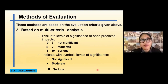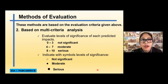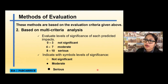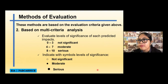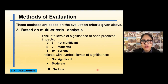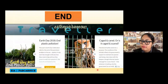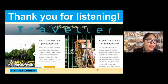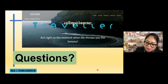We can evaluate the level of significance of each predicted impact using a scale of 0 to 3 — not significant, and we can also indicate significance with symbols: a dot with a halo for not significant, a full dot for moderate, and a bigger dot for serious. That's the multi-criteria analysis. These are the two methods of evaluating the identified predicted impacts of your specific project or activity. Do you have any questions? Thank you.